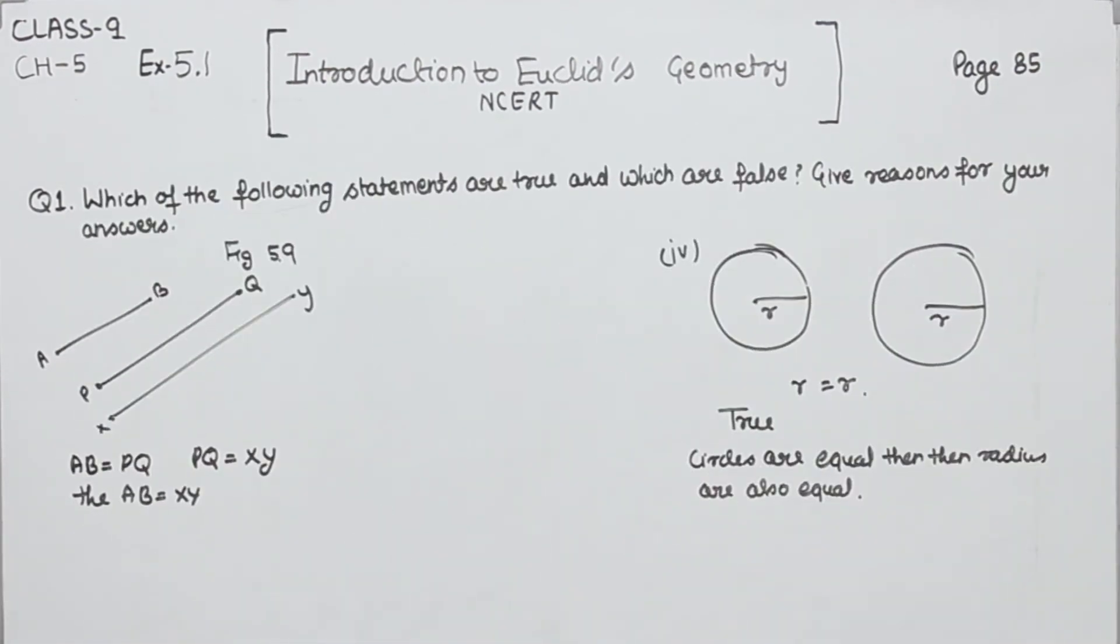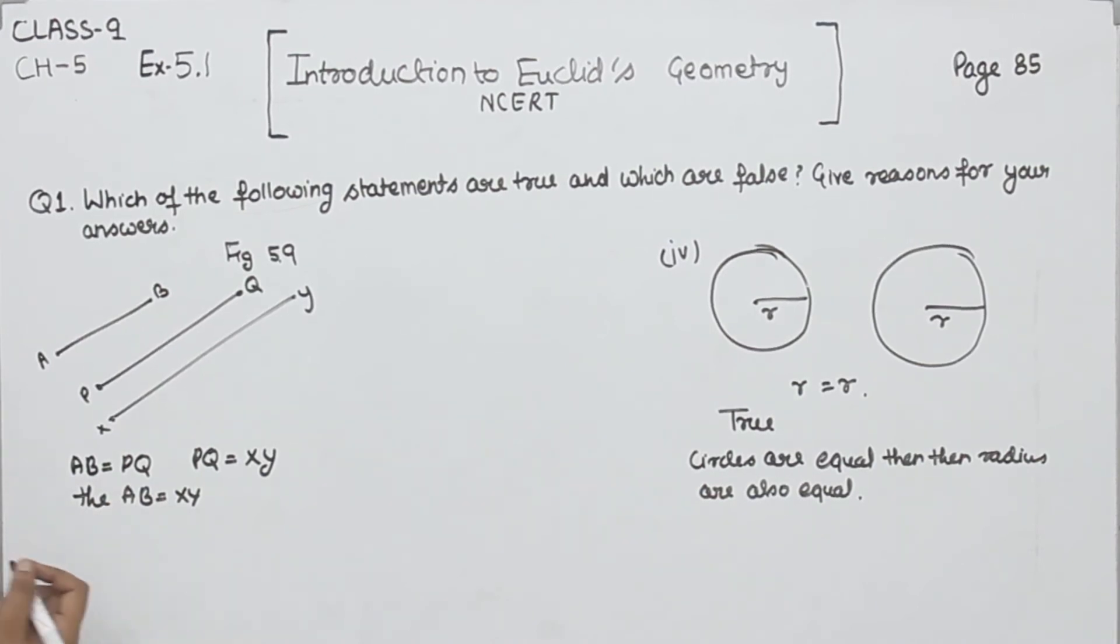Part 5. In figure 5.9, if AB is equal to PQ and PQ is equal to XY, then AB is equal to XY. This one is true according to the first axiom.